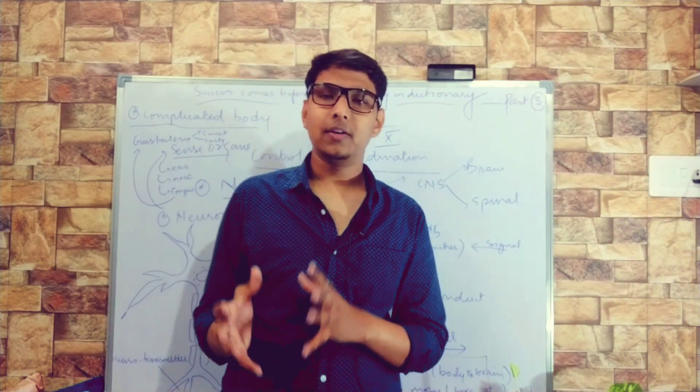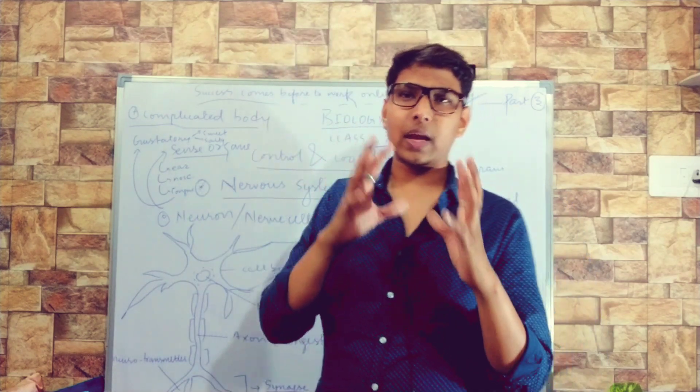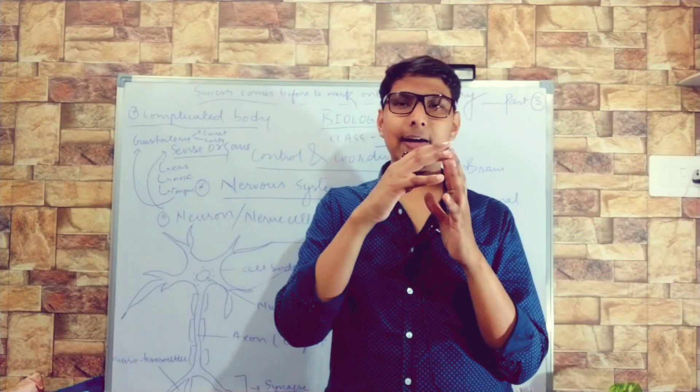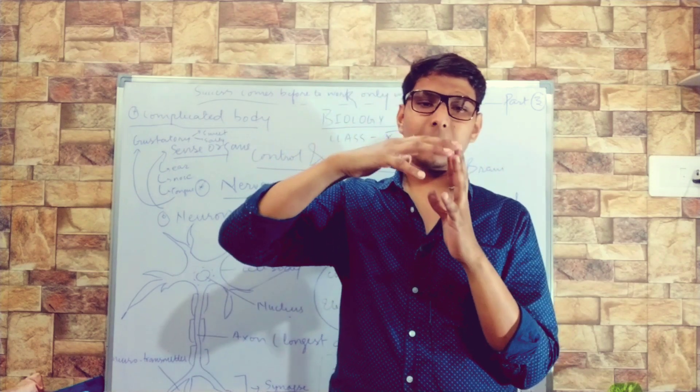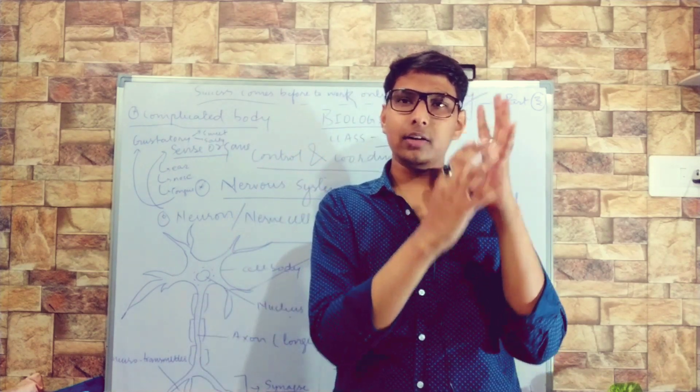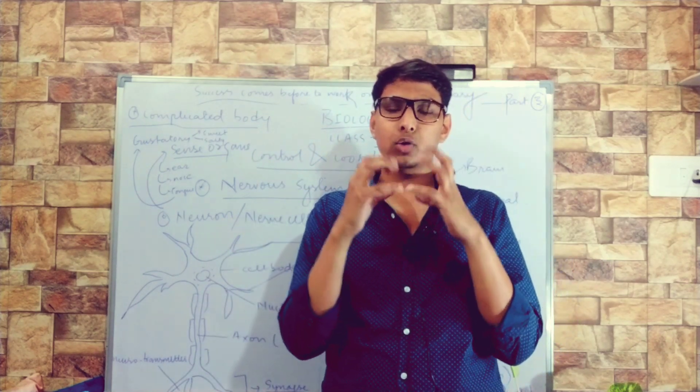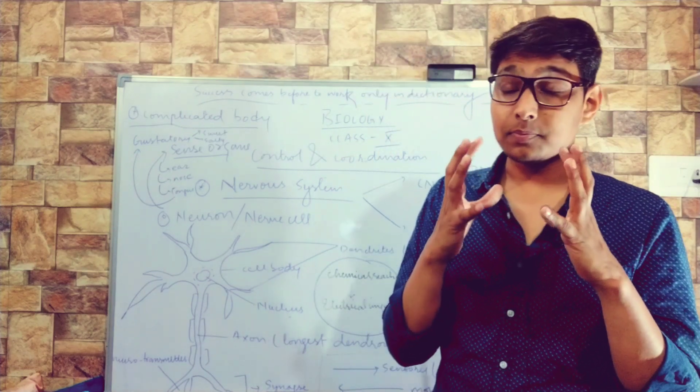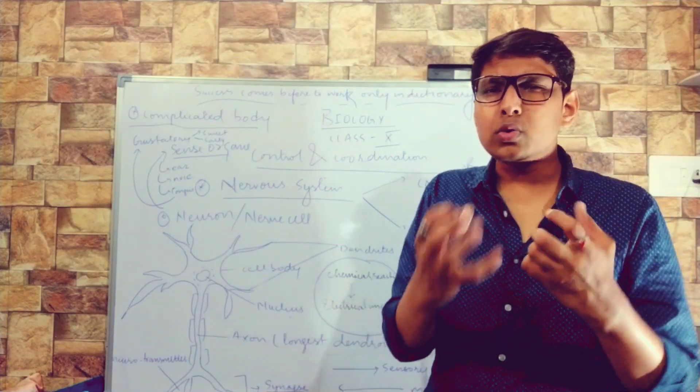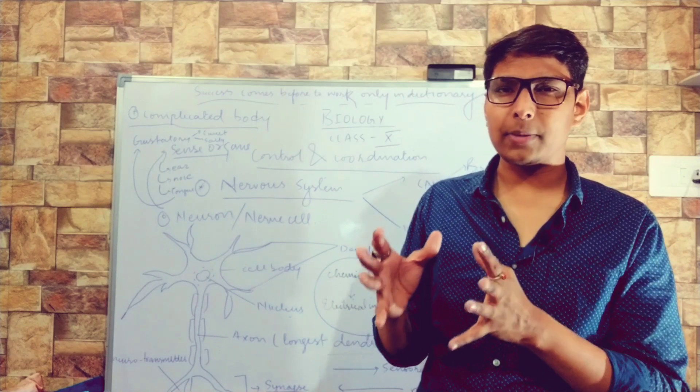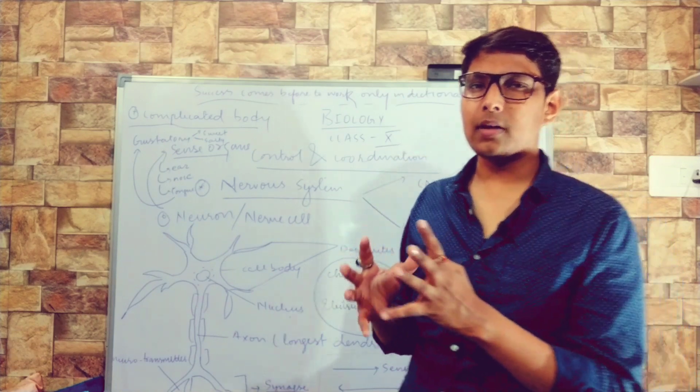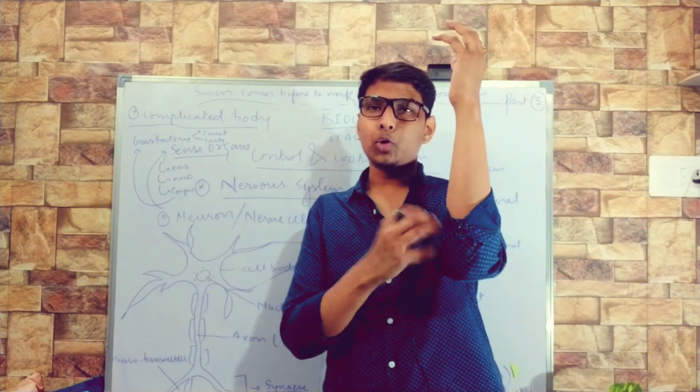How does it so happen? It happens with the help of chemical neurotransmitters. The moment dendrites get the change or get the message, it just transfers it in the form of chemicals. These chemicals or neurotransmitters induce the electrochemical impulse.